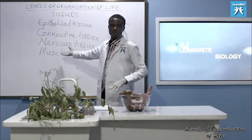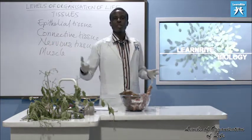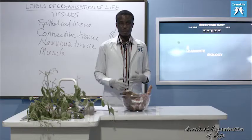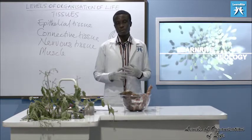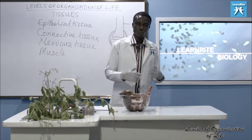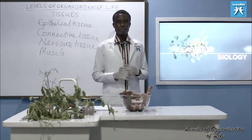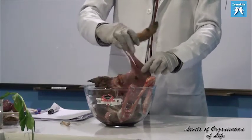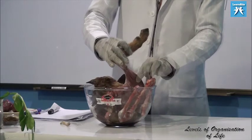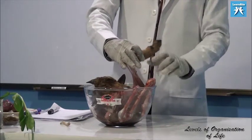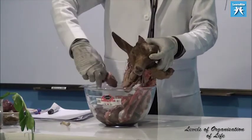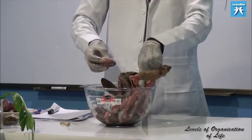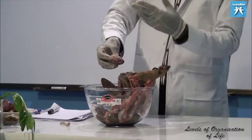Then you have muscle tissue — muscular tissue. Muscle tissue is made up of muscle cells, muscle fibers. They are for movement — they contract and relax and bring about movement. We have three main groups of muscular tissue. We have the skeletal muscle — the one that is attached to the bone. That is the muscle tissue known as skeletal muscle. Then we have the one found only in the heart — the cardiac muscle. This one doesn't get tired. The skeletal muscle gets tired easily.